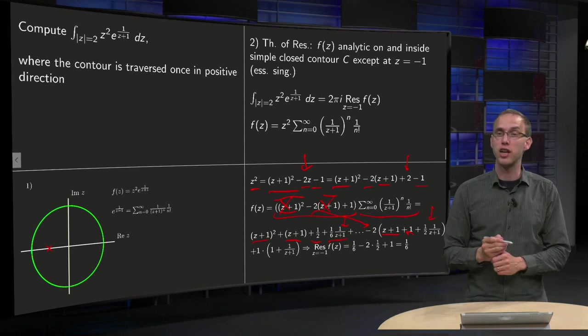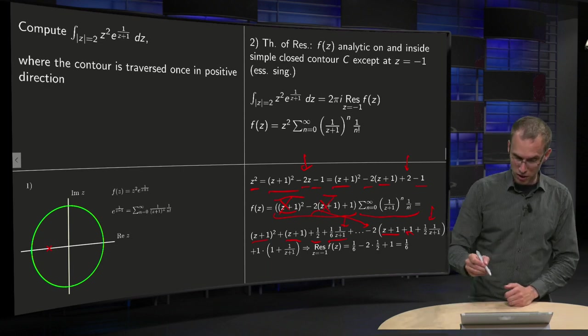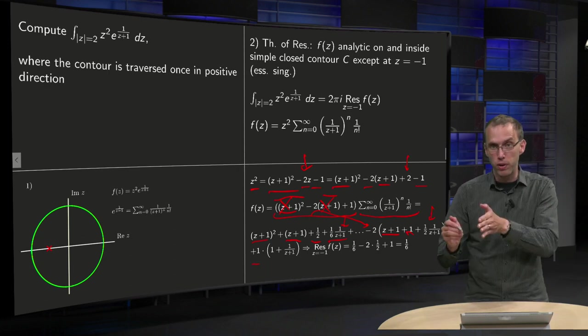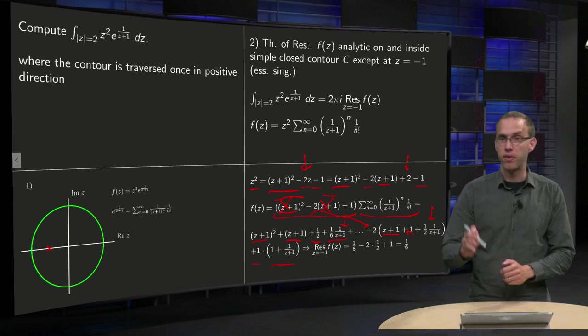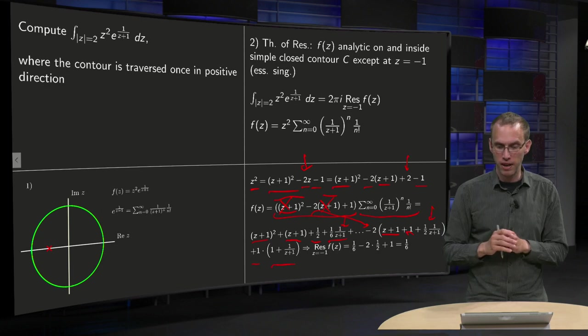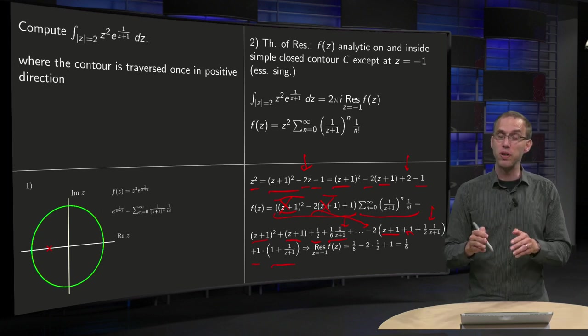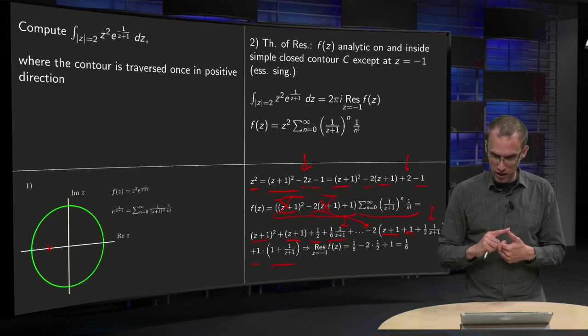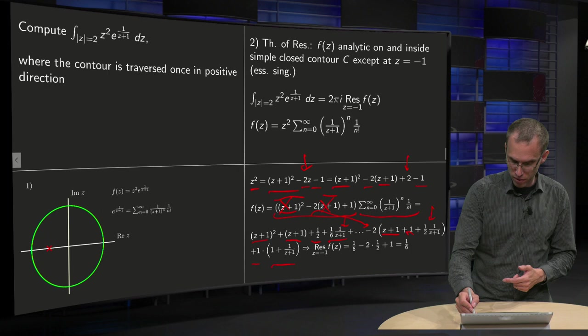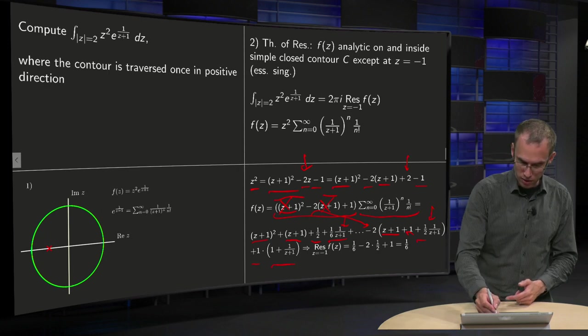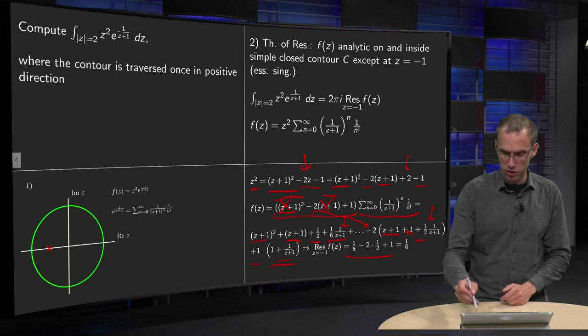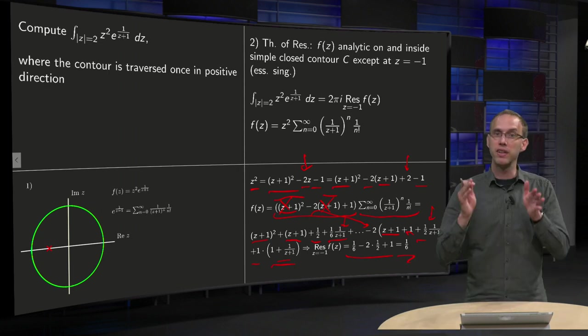This one is done. The last one, the 1, gives us a plus 1 times, we get a 1 plus 1 over z plus 1, and we can stop. We have more terms of course, but we can stop here. And then for the residue, we only need the coefficients of the 1 over z plus 1 term, so we have a 1 over 6, we get a minus 2 times 1 half from this one, and we get a 1 from this one, so we get 1 over 6 minus 1 plus 1 equals 1 over 6.